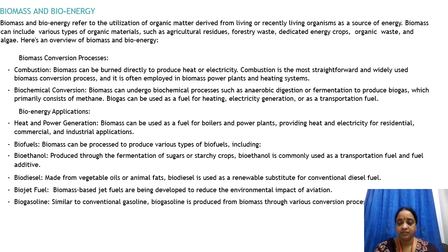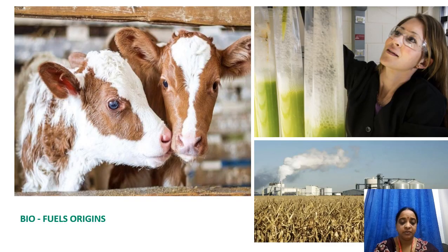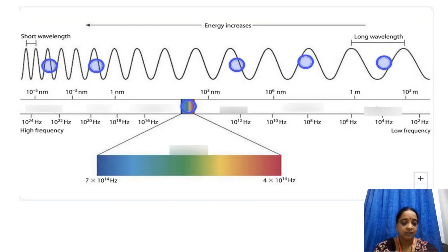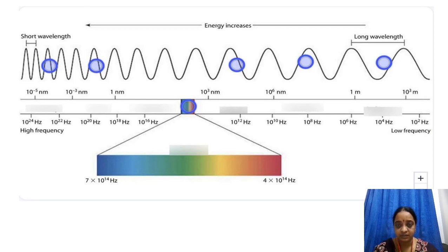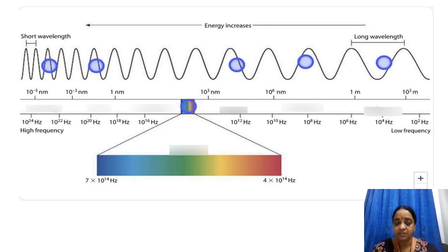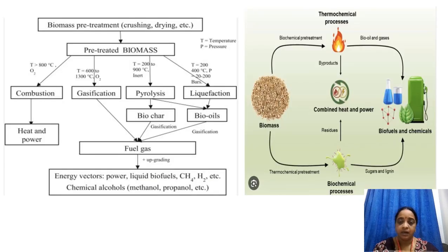Biofuel applications include bioethanol, biodiesel, biojet fuel, and bio gasoline. This is a short overview of the biomass conversion process. Biofuels origins are also shown here, along with the energy wavelength — where short wavelength and long wavelength occur, and how energy increase is happening globally, based on a survey taken from a journal.